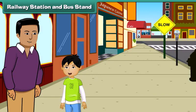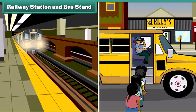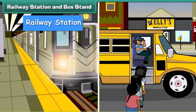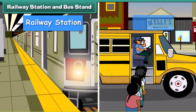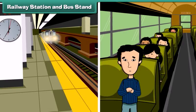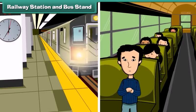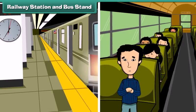Dad, I am getting tired now. Shall we go back home? OK dear. Let's go to the railway station. This is the railway station, and in front of it, that is the bus stand. People travel by trains or buses. Trains and buses join our city to various places.